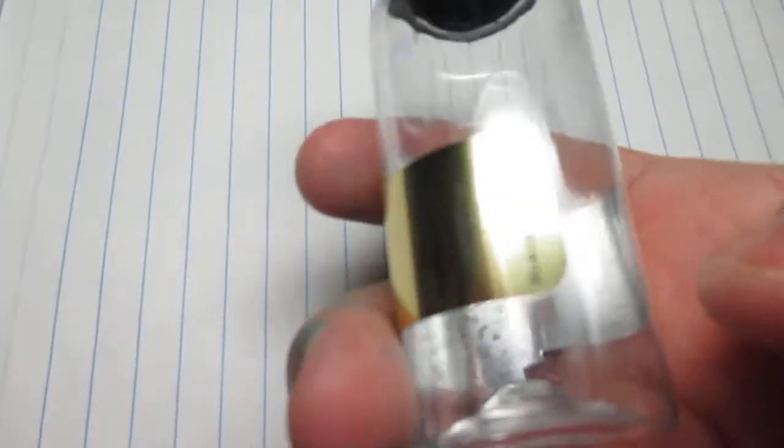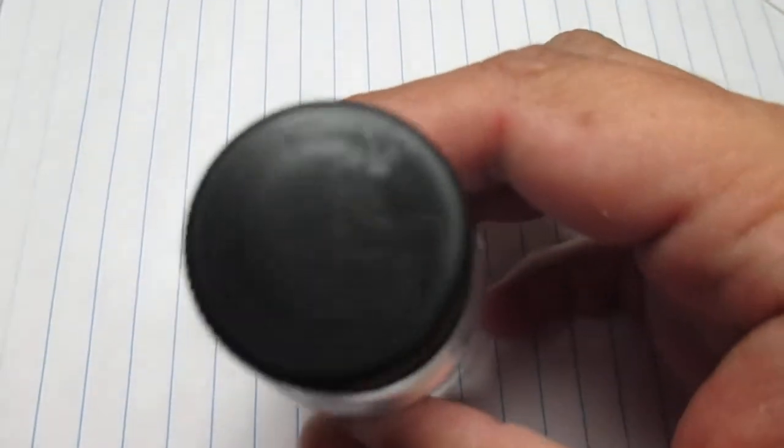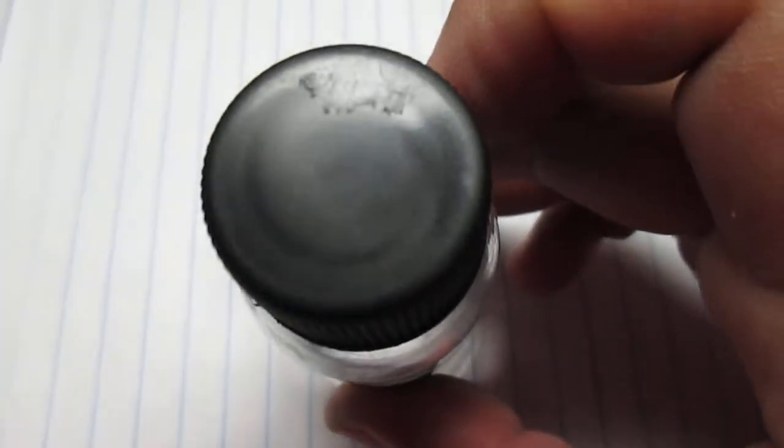Robert Oster ink usually comes in a 50ml bottle, looks like this, and it usually has a label on top that says what it is.